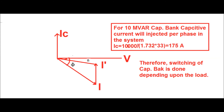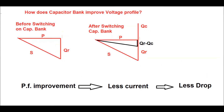Switching of the capacitor bank is done depending upon the load. Mainly in substations, switching is done during peak load periods, when most of the lagging power factor load is nullified and the power factor is improved. Before switching the capacitor bank, QR is the reactive power of the system. After switching on, the reactive power becomes QR minus QC, where QC is the leading reactive power injected by the capacitor bank. Since the power factor is improved, less current is drawn from the system, reducing line losses and voltage drop, which automatically improves the voltage profile.